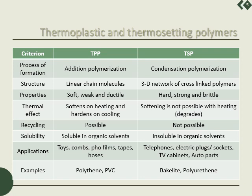Thermoplastics are soft, weak, and ductile, whereas thermosets are hard, strong, but sometimes brittle. On heating, thermoplastics soften on heating and harden on cooling, whereas softening is not possible with thermosets — they simply degrade. Once you form a thermoset and heat it further, it degrades. Recycling is possible in the case of thermoplastics, whereas it is not possible in the case of thermosets.